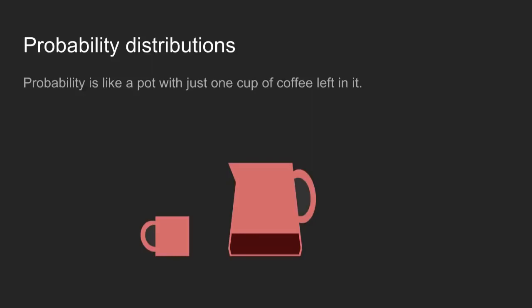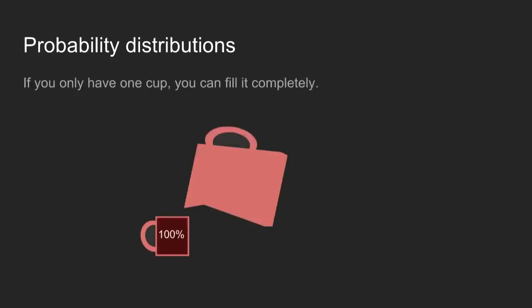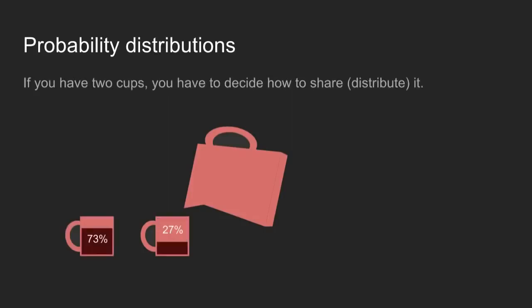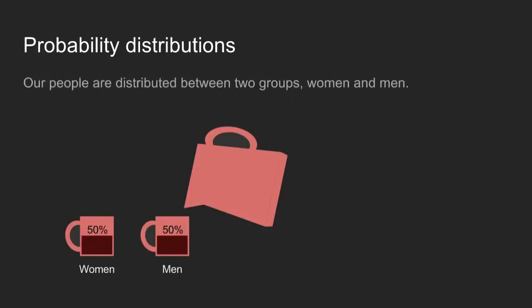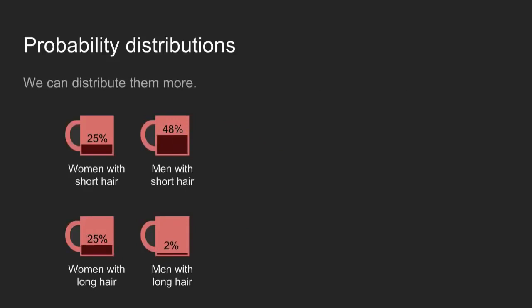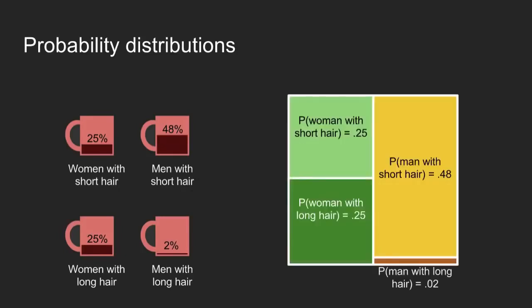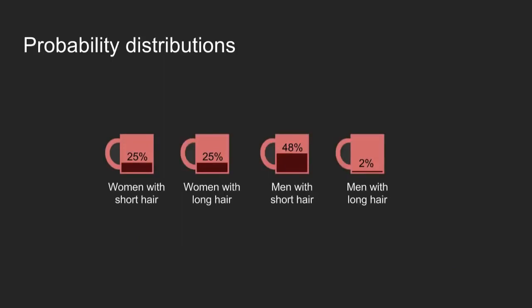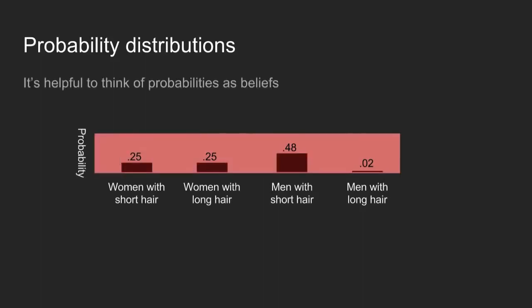You can think of probability like a pot with just one cup of coffee in it. If you just have one cup to fill up, you can fill it all the way to the top. But if you have more than one cup, you have to share it around or distribute it — and you can share it with any proportion you want. For instance, if we're representing the number of men and women at the movies, we could share it 50-50, but it will always add up to 100%. We could even share it further into different categories. Here we see the joint probabilities of all four different categories we were working with.